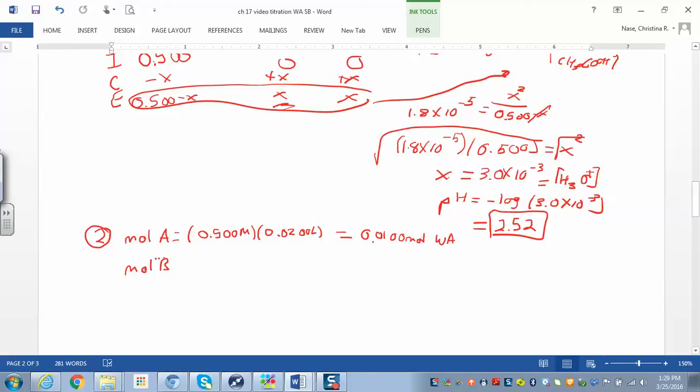Find the moles of your strong base, the sodium hydroxide. We also started off with 0.5 molar. And in the second part, it says we have 8 mL, so that's 0.008 liters. So we multiply that through. We get 0.004 moles of your strong base.